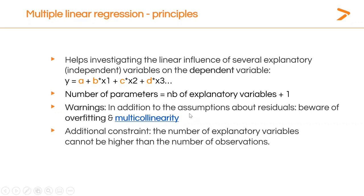An additional constraint is that the number of explanatory variables cannot be higher than the number of observations — you cannot have more columns than rows. There are solutions for specific datasets where you have more variables than observations, such as in chemometrics where you can have hundreds of variables and just a few observations. Specific solutions include PLS regression, or ridge and lasso regression.